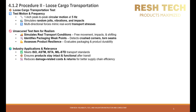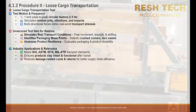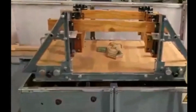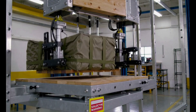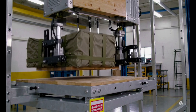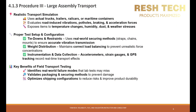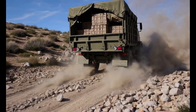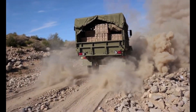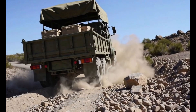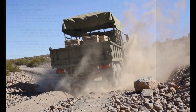Let's take a look at Procedure 2, Loose Cargo Transportation. In this procedure, a package tester is used to simulate loose cargo transportation. The package tester imparts a 1-inch peak-to-peak circular synchronous motion at 5 Hz. The test item is not secured to the bed, ensuring realistic simulation of transportation forces. For large items, the test uses actual transport vehicles on representative test surfaces, simulating real-world road vibrations, shocks, and environmental conditions. The test setup must mimic the actual transportation configuration, including tie-downs and weight distribution.